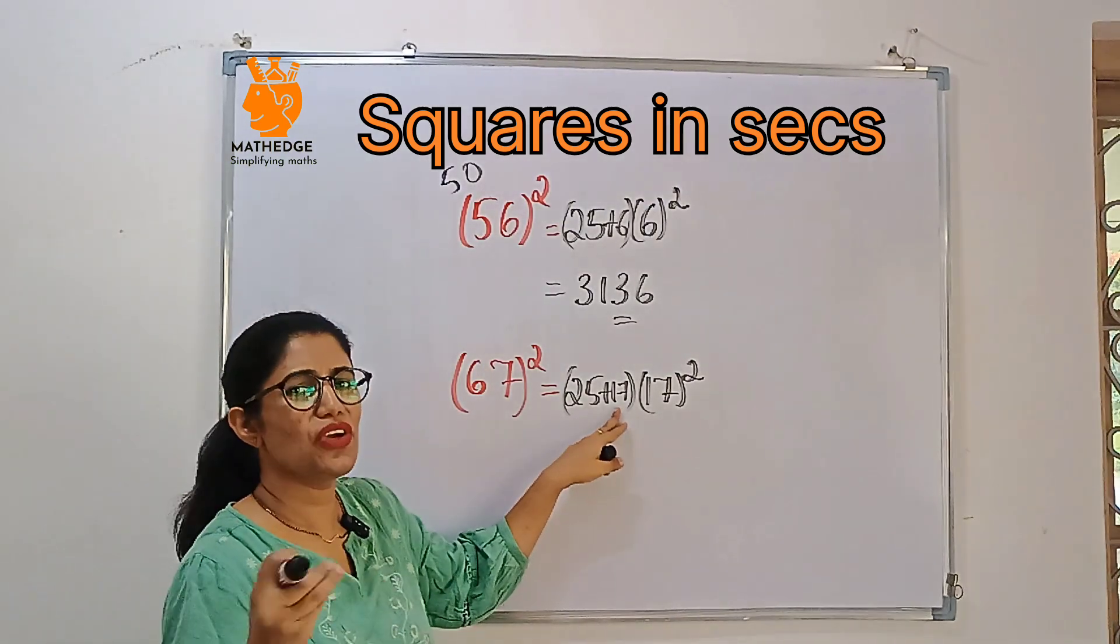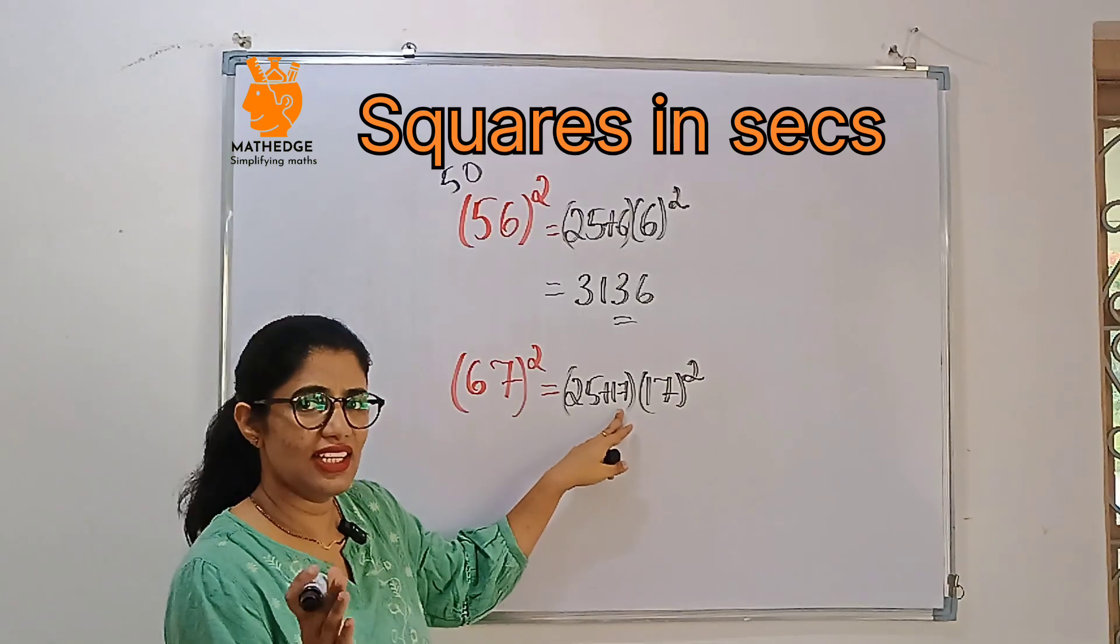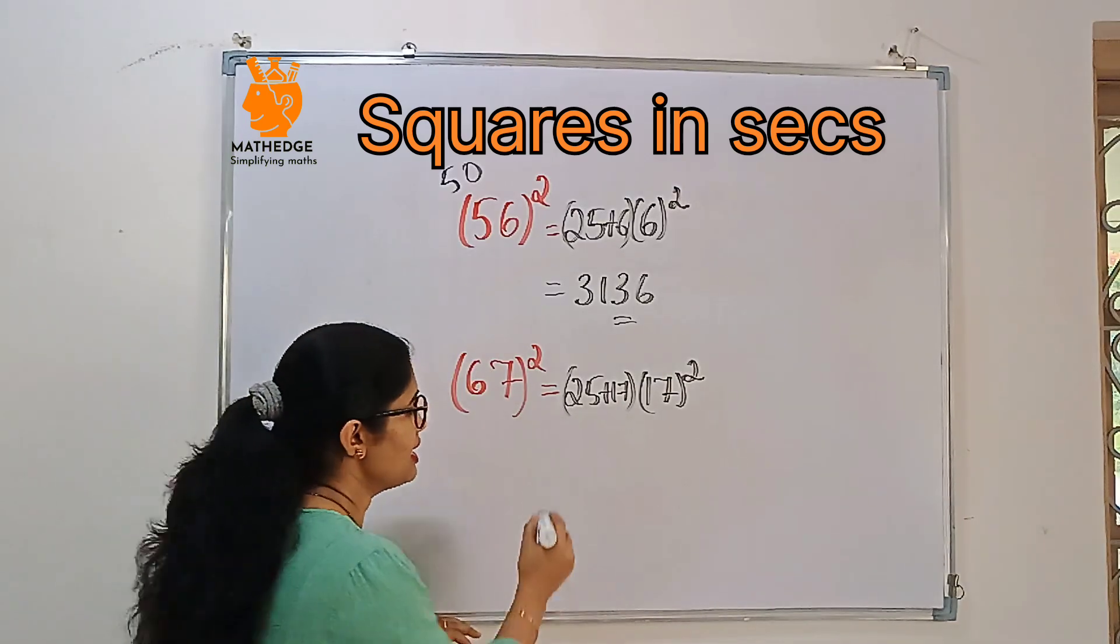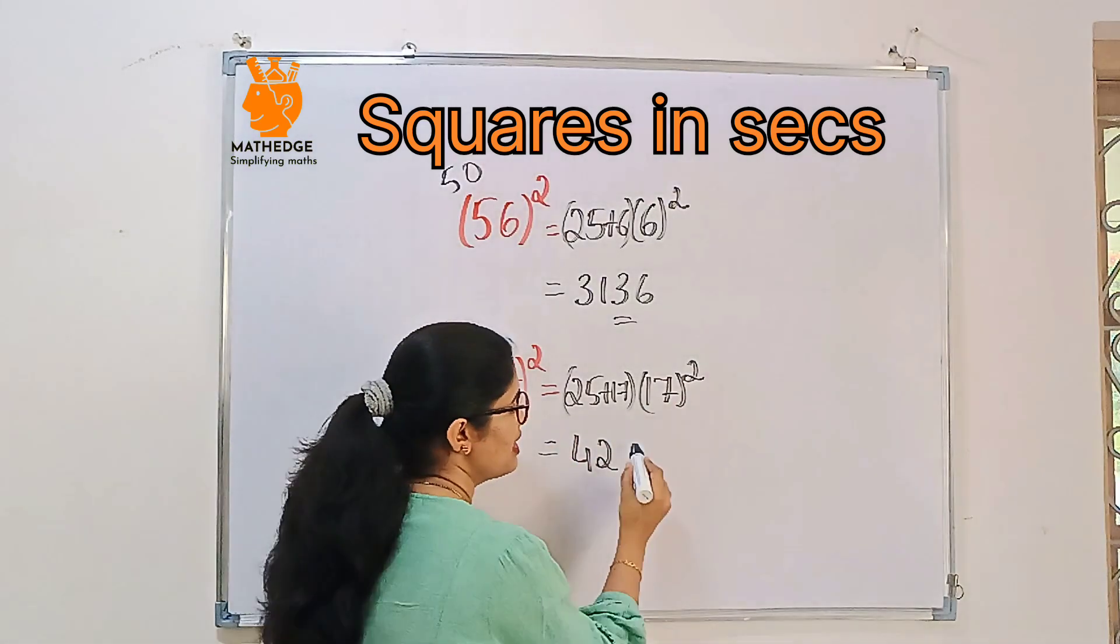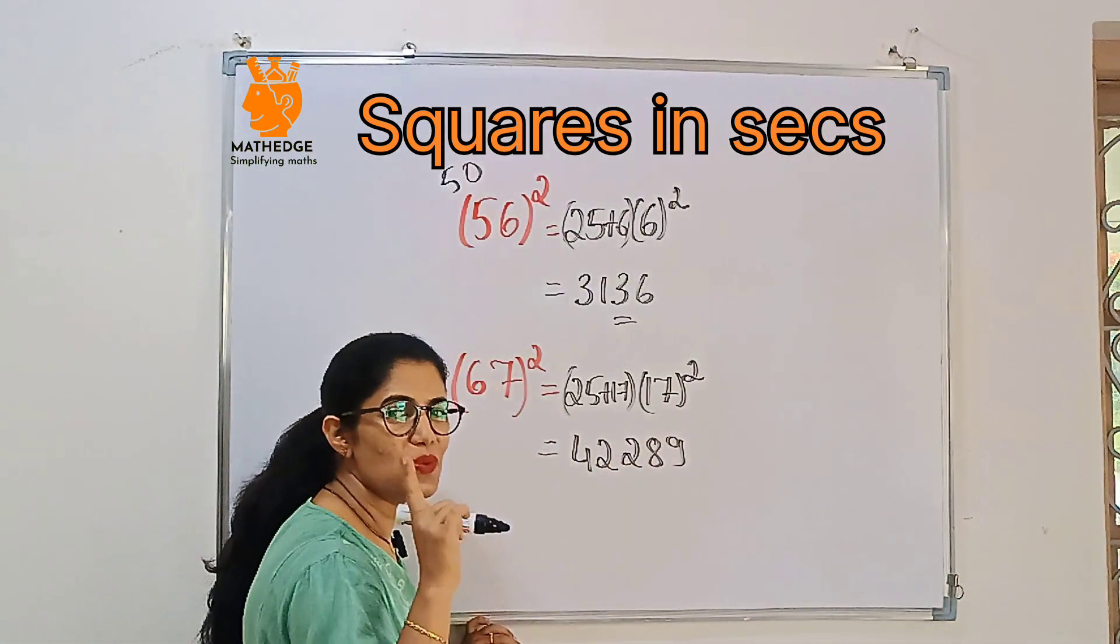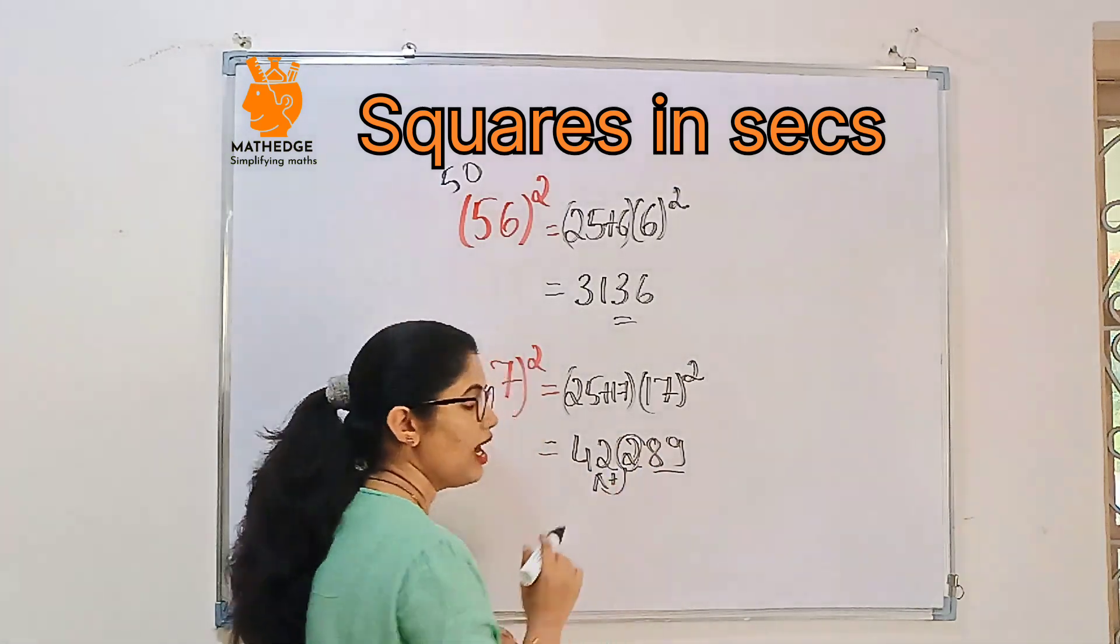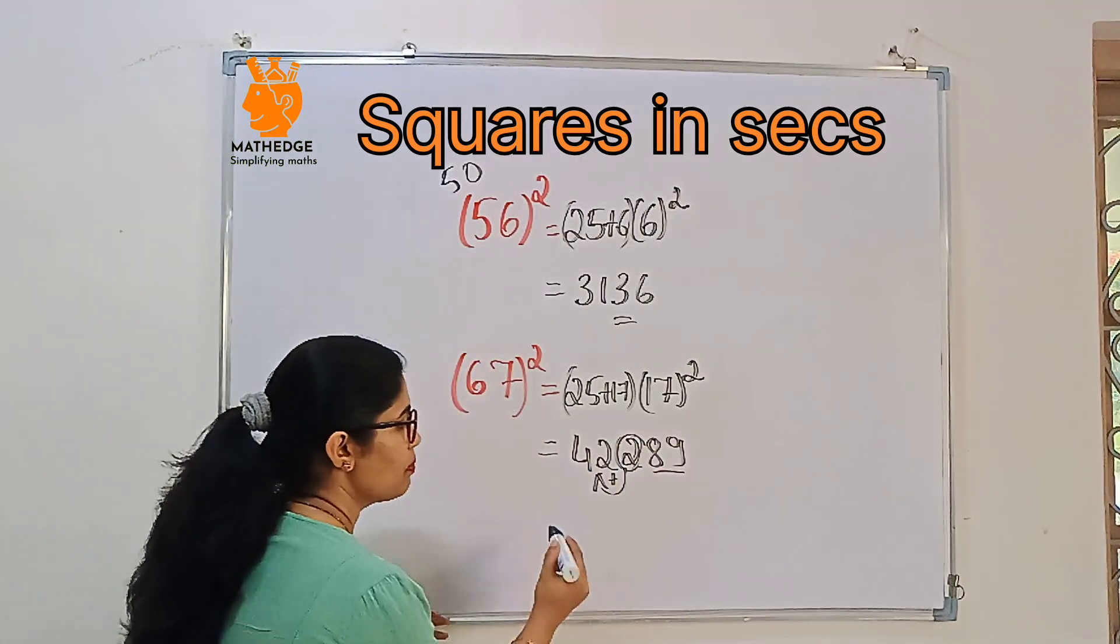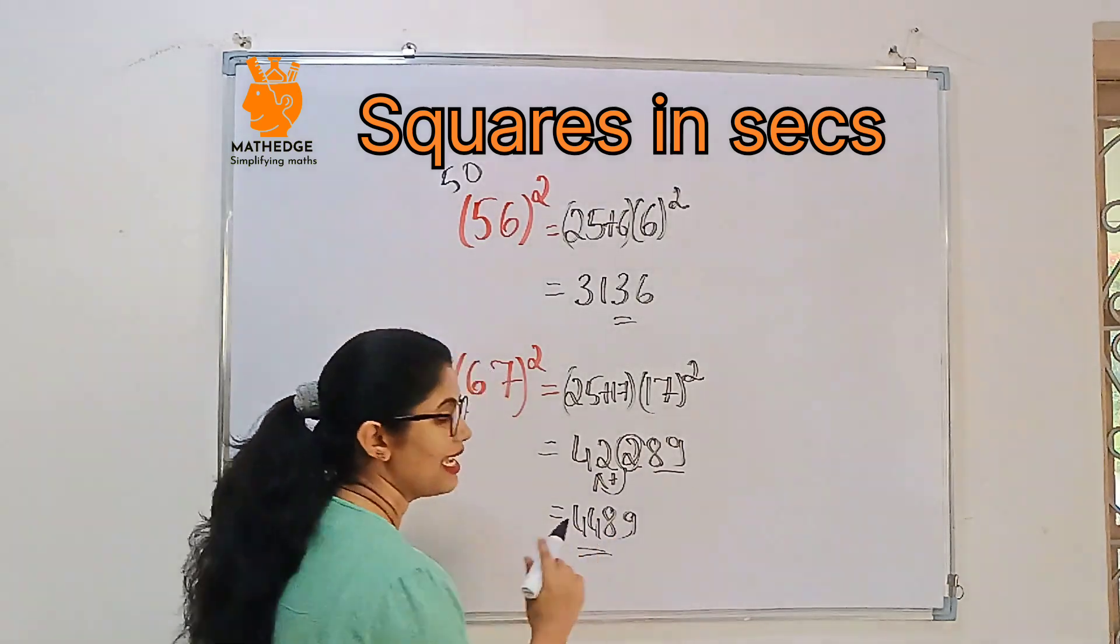Rather than adding 17, take the whole number. 25 plus 20 is 45. Here we added an extra 3, so subtract that. 45 minus 3 is 42. Then 17 squared, which we all know is 289. We should place only a 2-digit number, so we carry to the next part. 42 plus 2 is 44, and the remaining is 89. So that's our answer: 4489.